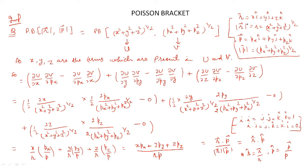The position vector is defined as xi + yj + zk, where x, y, z are the components along the x, y, z axes and i, j, k are the unit vectors. So the magnitude of the position vector is r = (x² + y² + z²)^(1/2). Similarly, momentum is defined as pxi + pyj + pzk, where px, py, pz are the momentum components along x, y, and z axes. So the magnitude of momentum is p = (px² + py² + pz²)^(1/2).